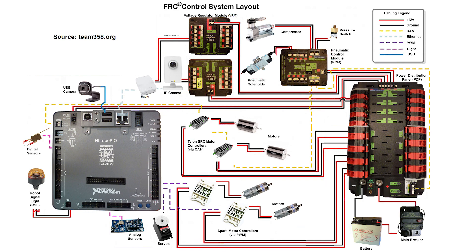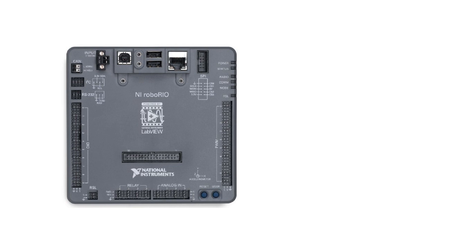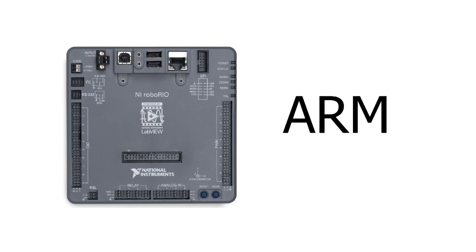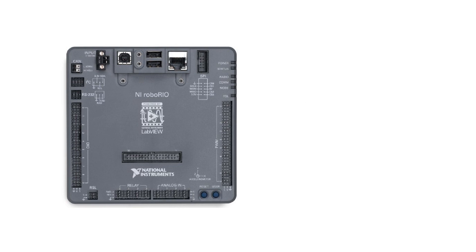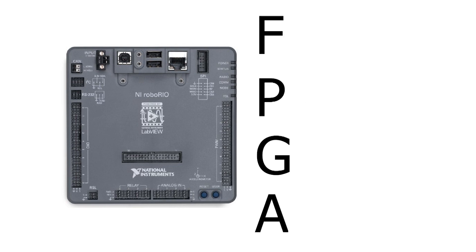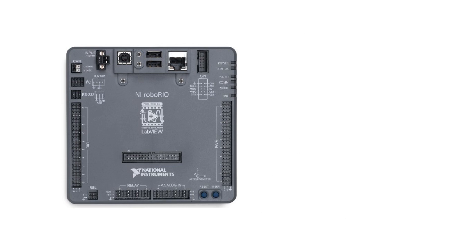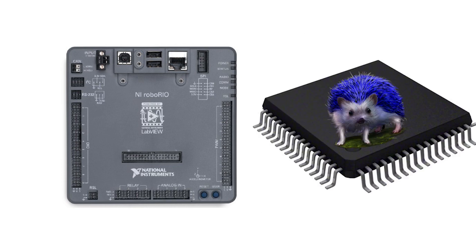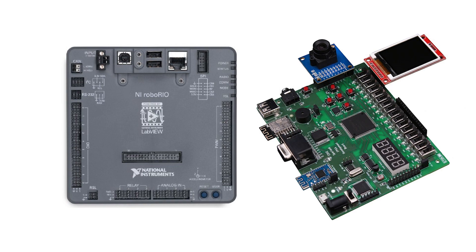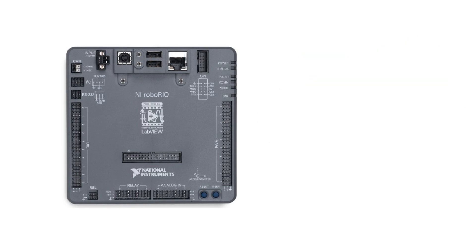Let's start by looking at the brains of the operation, the RoboRio. The RoboRio is the main computer for the robot. It has an ARM microcontroller as well as an FPGA, or field programmable gate array. FPGAs are essentially very fast hardware-based computers and are good for interfacing with a lot of devices quickly. The Rio runs all the code for the robot, so it's safe to say it's pretty important.